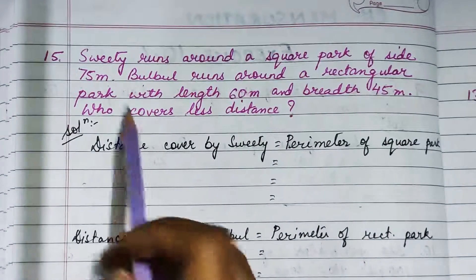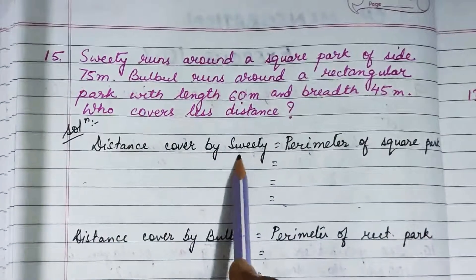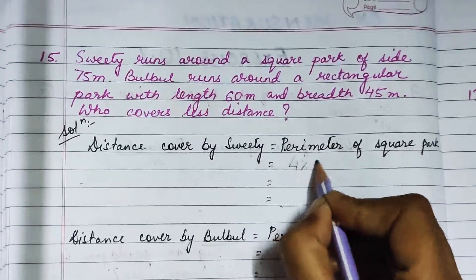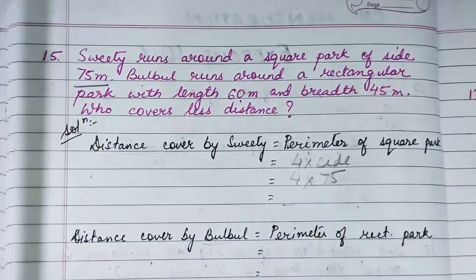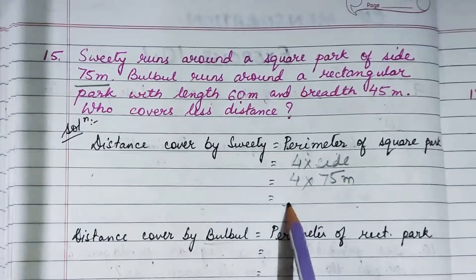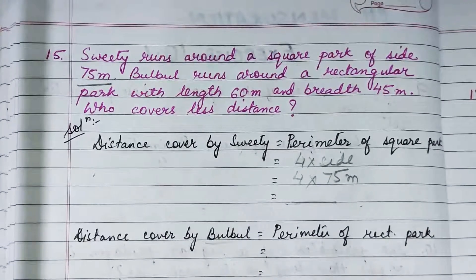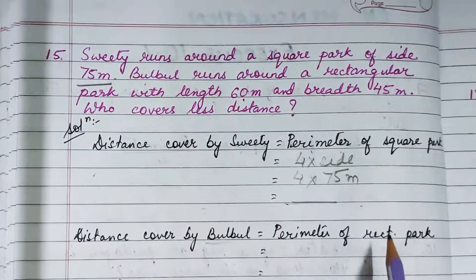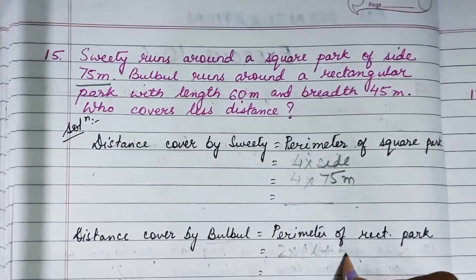Sweety is running along a square park, so the distance covered by Sweety equals the perimeter of the square park, which is 4 into side — side is 75 meters. Multiply 4 by 75 meters to get Sweety's distance. Similarly, the distance covered by Bulbul equals the perimeter of the rectangular park, which is 2 into (length plus breadth).